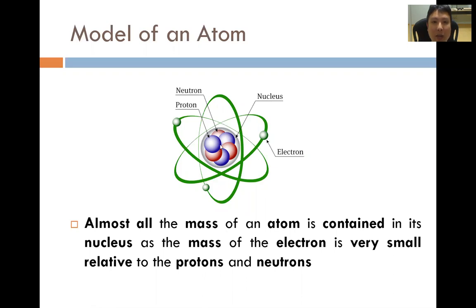We can see that the majority of the mass is contained in a very small region of space at the center, at the nucleus of the atom. Almost all the mass of the atom is contained in the nucleus, since the mass of the electron is almost negligible compared to the mass of the protons and neutrons.